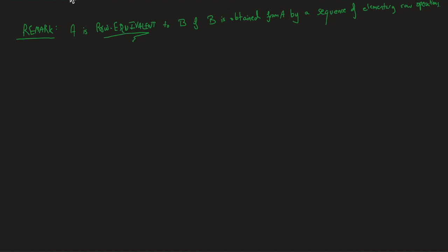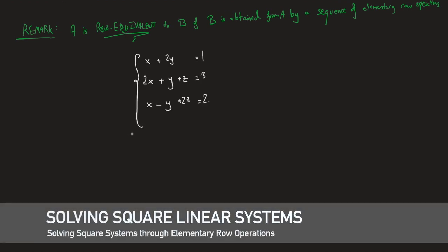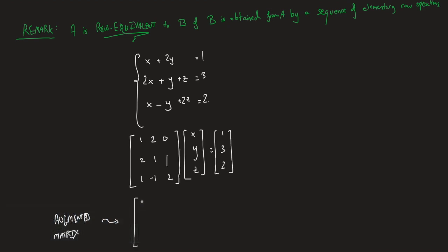Let me give you an example of row equivalence. Say we've got the following system, which in matrix form gives us an augmented matrix — nothing other than the coefficient matrix augmented by the B vector: 1, 3, and 2. Let's denote this matrix by A and perform a sequence of elementary row operations. You'll actually see that performing these operations on the matrix is equivalent to performing the same operations directly on the equations in the linear system.